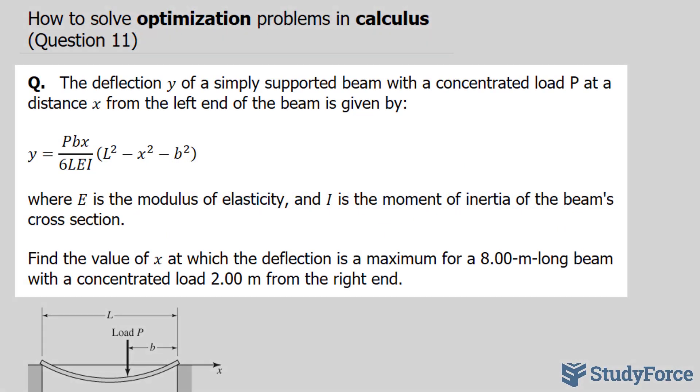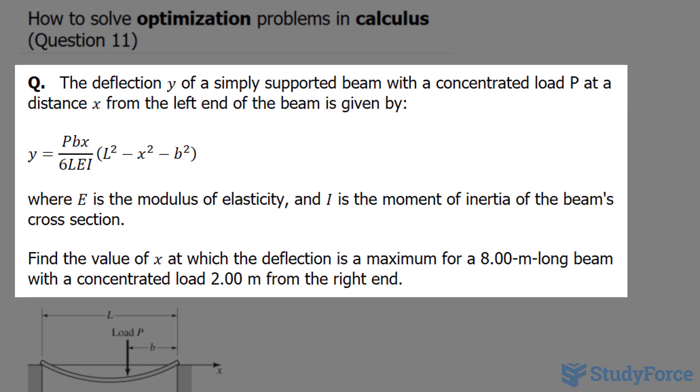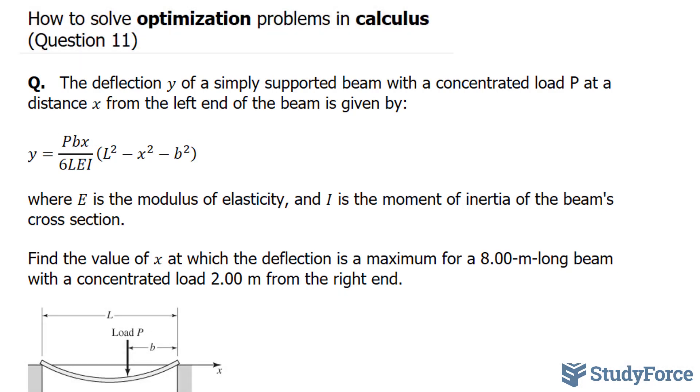In question 11 of this series, we're told the deflection y of a simply supported beam with a concentrated load P at a distance x from the left end of the beam is given by the equation shown here, where E is the modulus of elasticity, I is the moment of inertia of the beam's cross-section. Find the value of x at which the deflection is a maximum for an 8 meter long beam with a concentrated load 2 meters from the right.